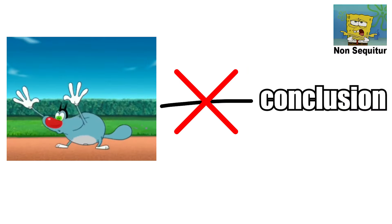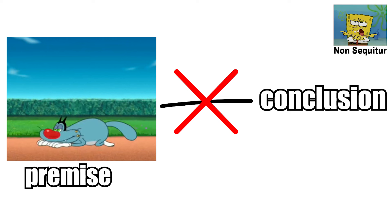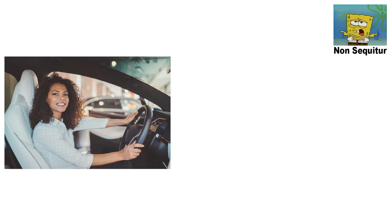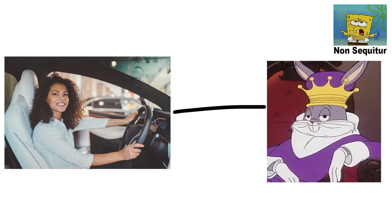Non sequitur. A non sequitur fallacy occurs when the conclusion doesn't logically follow from the premises. For instance, she drives a nice car, so she must be wealthy — assumes a direct connection that may not actually exist.